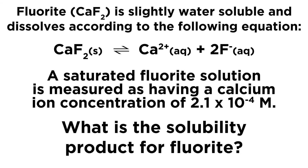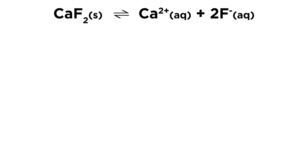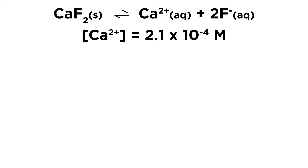That's all the information we need. Let's put our equilibrium up top — we know that the calcium ion concentration is 2.1 times 10 to the negative 4 molar.